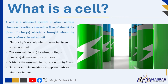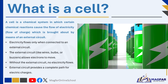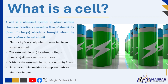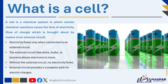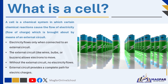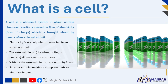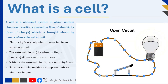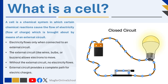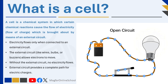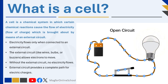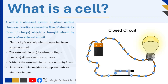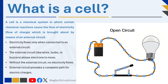A cell is a chemical system in which certain chemical reactions cause the flow of electricity, brought about by means of an external circuit. This means that inside the cell, chemical substances react to create electrical energy. However, this energy can only flow when the cell is connected to an external circuit, such as wires and a device like a light bulb or buzzer. The external circuit provides a path for the electric charges — electrons — to travel through. Without this connection, the electrons cannot move, and the cell cannot produce usable electricity. So the external circuit is essential for the electrical energy to leave the cell and power something.